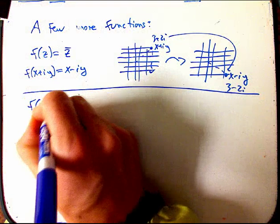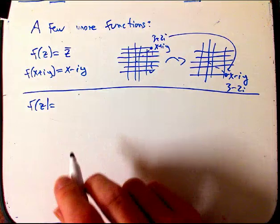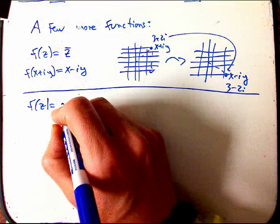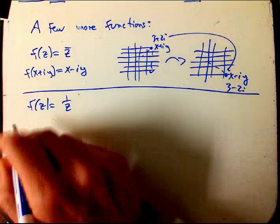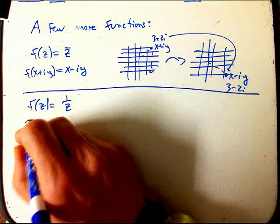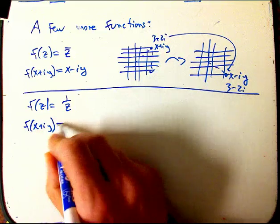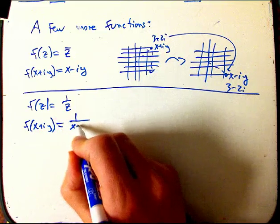Another one, I showed you z squared with those funky parabolas with the computer picture. What about 1 over z? That's a really super important function. To understand the picture, we'll go to real imaginary parts, it's 1 over x plus iy.